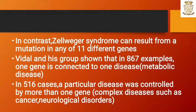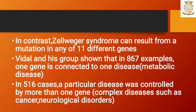In contrast, Selviger syndrome can result from a mutation in any of 11 different genes. Whedon and his group showed that in 867 examples, one gene is connected to one disease — that is metabolic disease. In 516 cases, a particular disease was controlled by more than one gene, as seen in complex diseases such as cancer and neurological disorders.